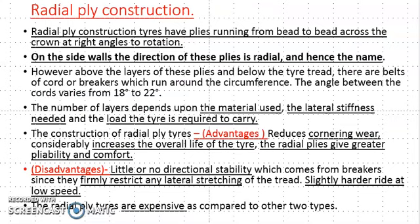These radial ply construction tyres have plies running from bead to bead across the crown at right angles to the rotation. The direction of these plies in the sidewalls is radial, hence the name radial ply construction.